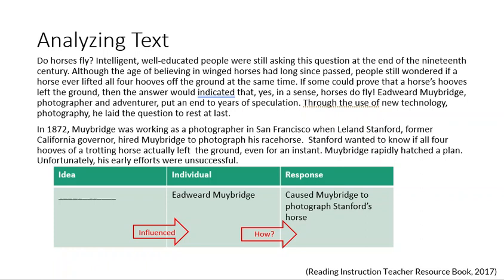Edward Muybridge, photographer and adventurer, put an end to years of speculation. Through the use of new technology — photography — he laid the question to rest at last. In 1872, Muybridge was working as a photographer in San Francisco when Leland Stanford, former California governor, hired Muybridge to photograph his racehorse. Stanford wanted to know if all four hooves of a trotting horse actually left the ground, even for an instant. Muybridge rapidly hatched a plan. Unfortunately, his early efforts were unsuccessful.